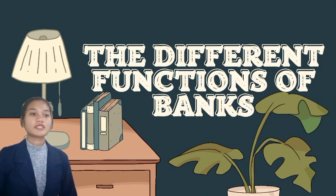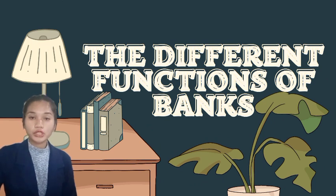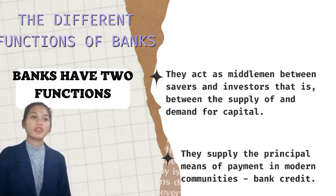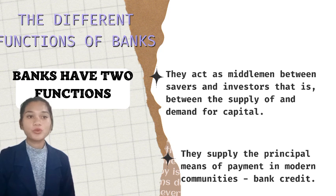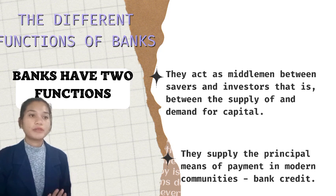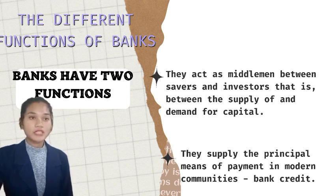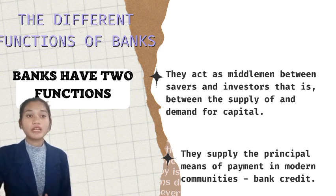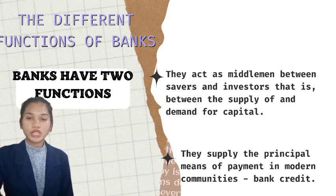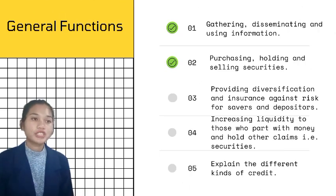The next subtopic is about the different functions of banks. Banks have two functions. First, the bank acts as middlemen between savers and investors — that is, between the supply and the demand for capital. The second function is they supply the principal means of payment in modern communities. Bank credit financial institutions can facilitate the saving-investment process by performing one or more general functions.